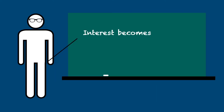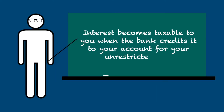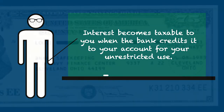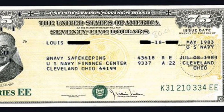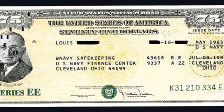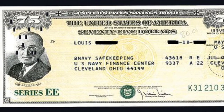Interest becomes taxable to you when the bank or other financial institution credits it to your account and you have unrestricted use of it. Interest on United States Savings Bonds usually becomes taxable when you cash in the bond.